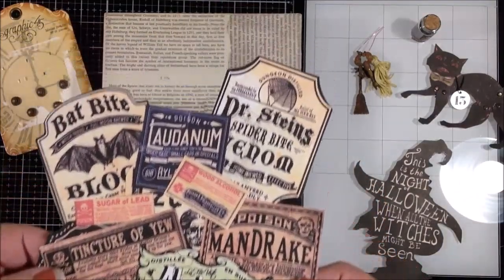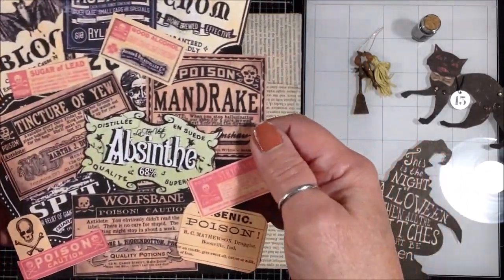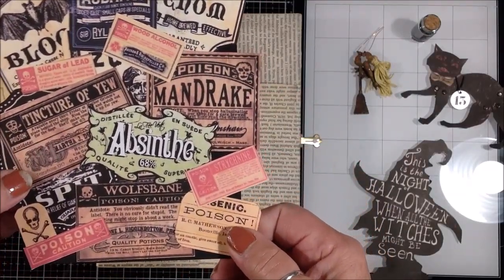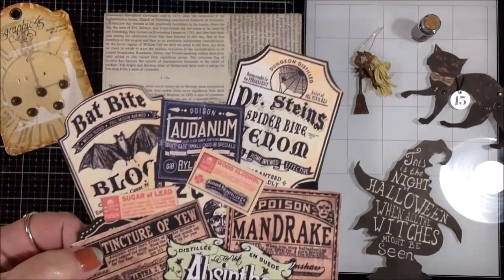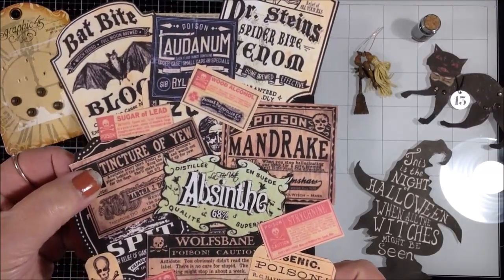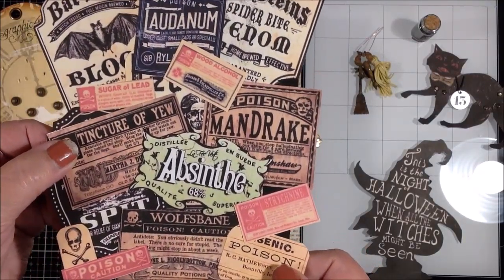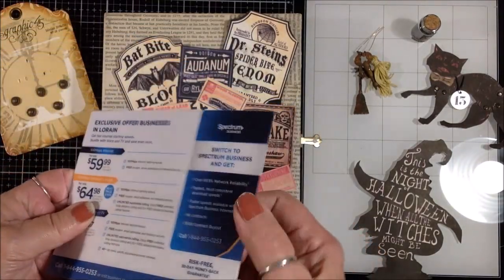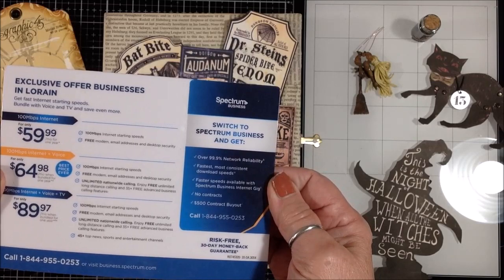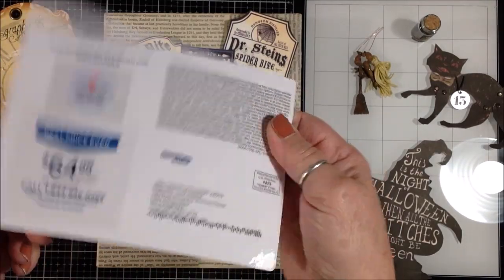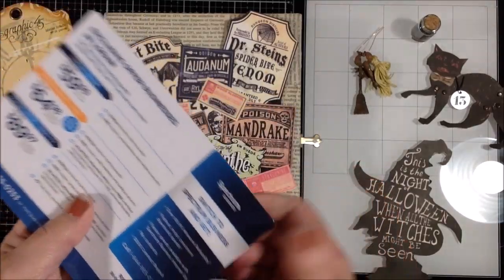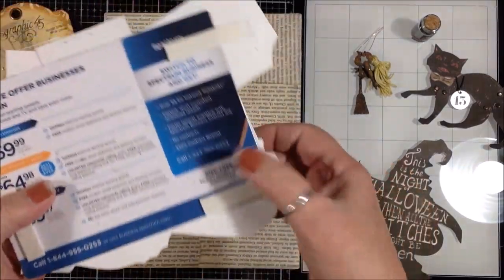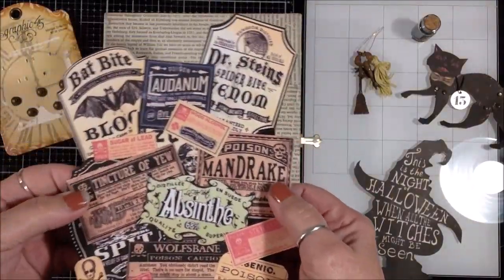But what I did for the front is I had all these cool pieces of ephemera - labels from Halloween printables and old apothecary labels and whatever. A couple years ago someone gifted me a bunch of these. I also have these plastic postcards, advertising cards from Spectrum that came in the mail. They make really good substrates to put things on.